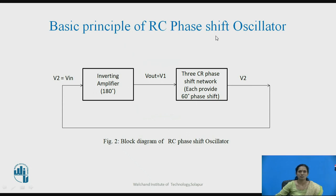The basic principle of the RC phase shift oscillator: we are using an inverting amplifier, and the output voltage is given to the input of a CR network. We are using three CR networks so that 180 degrees phase shift is obtained. Each CR combination provides 60 degrees phase shift. That output voltage V2 is again provided to the input of the amplifier, that is V2 equal to Vin. The feedback network is a CR combination and we are using a transistorized amplifier.